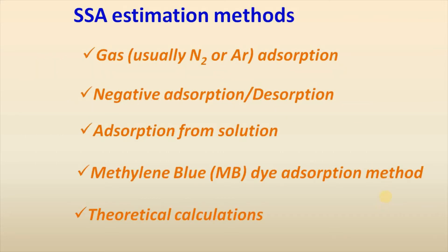How can we estimate specific surface area? It is simple, using several methods. The first method is gas adsorption — usually nitrogen or argon gas is used. Then negative adsorption or desorption method. Then adsorption from solution. Then methylene blue adsorption method. And finally, theoretical calculations.